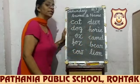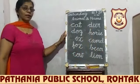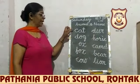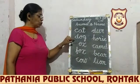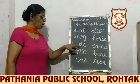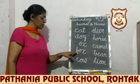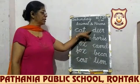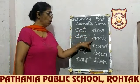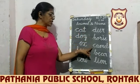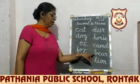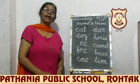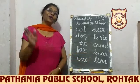You have to learn the names and spellings. Let's count them all: cat, dog, ox, fox, cow, deer, horse, camel, bear, and lion. Okay, bye.